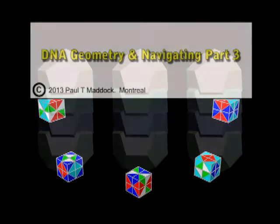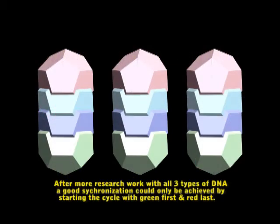In my last video, Part 2, I figured out the A-DNA running for 9 bends. But to have full synchronization between the 3 types of DNA, I found that starting with the red had to be changed to the green.